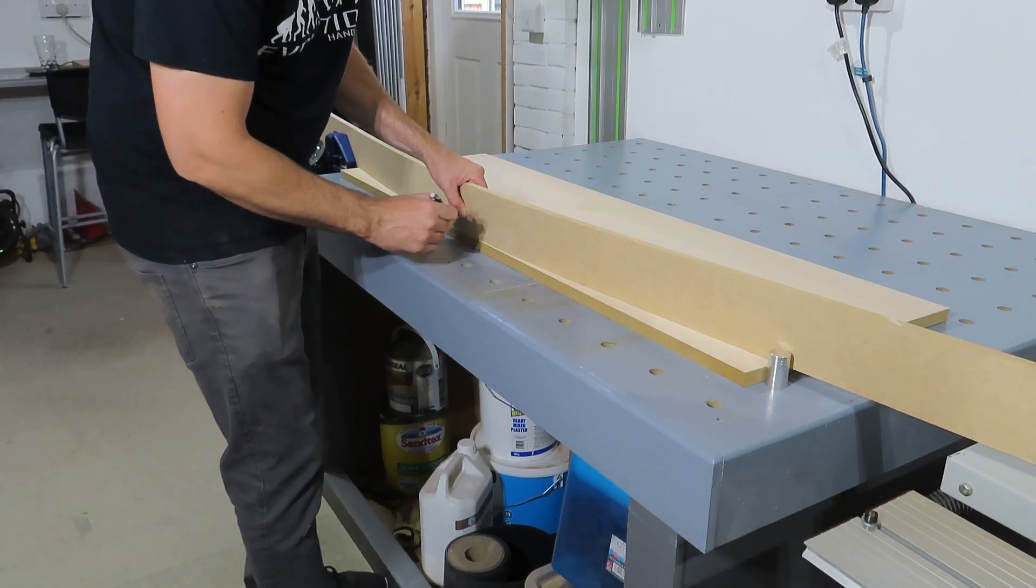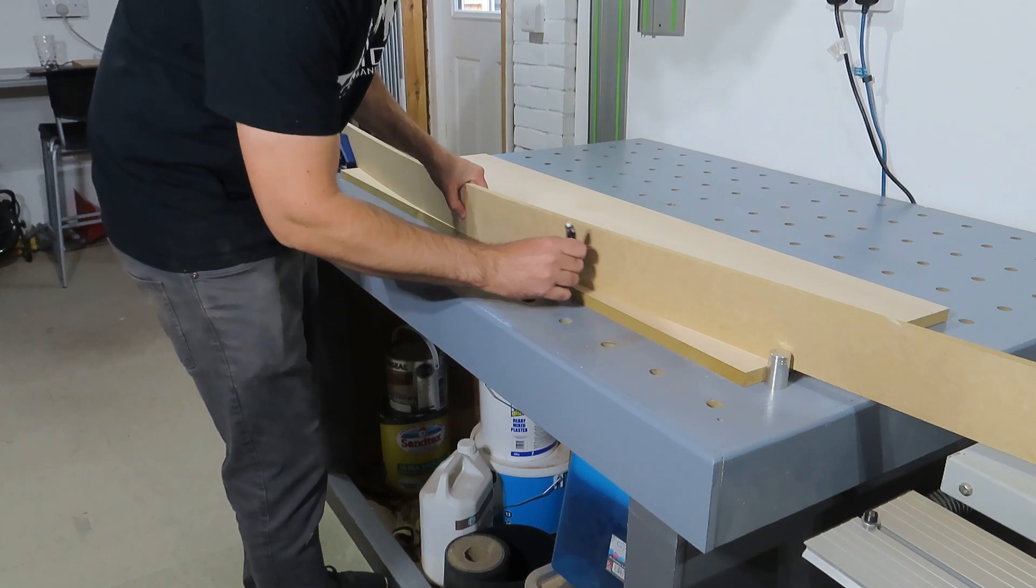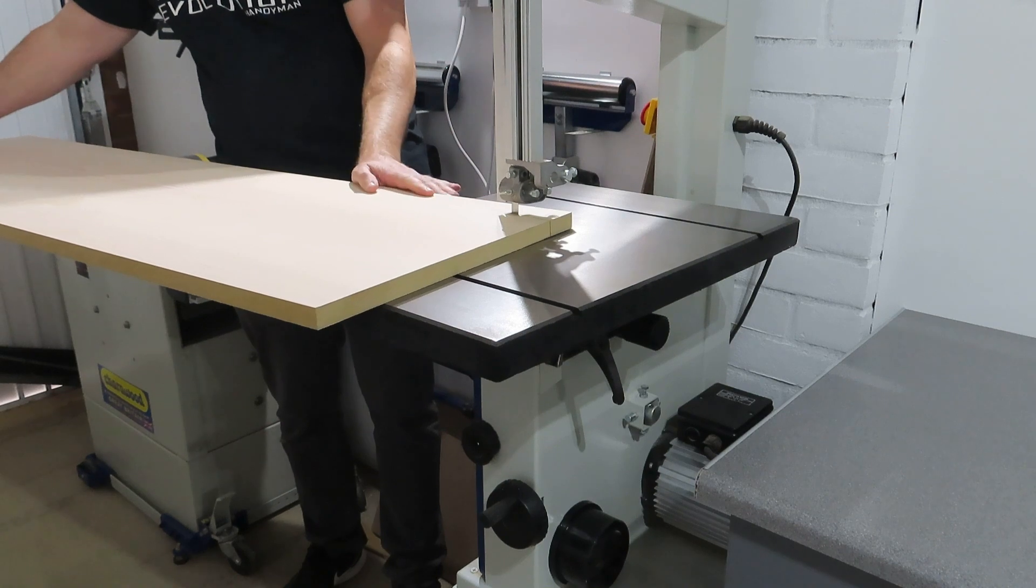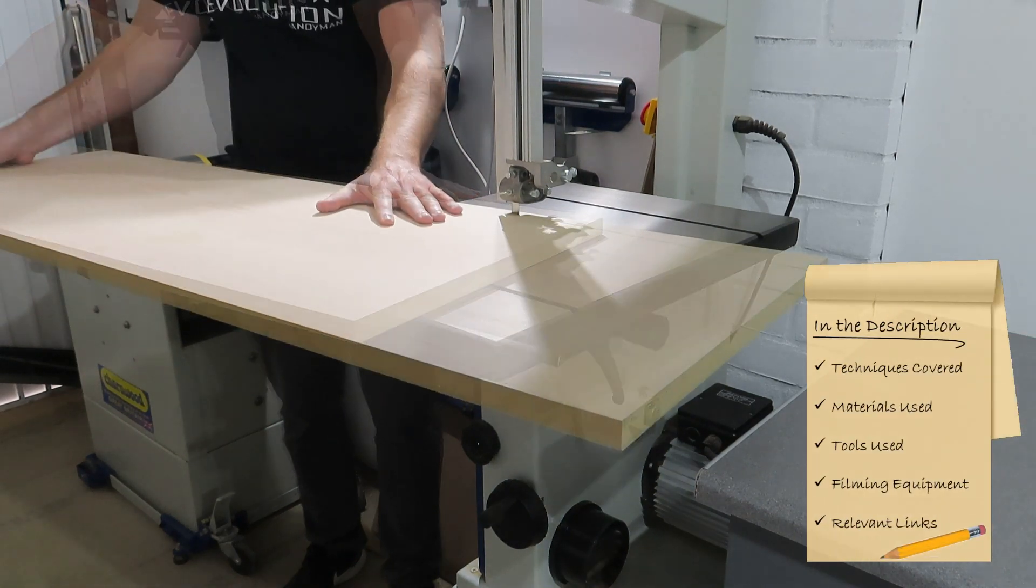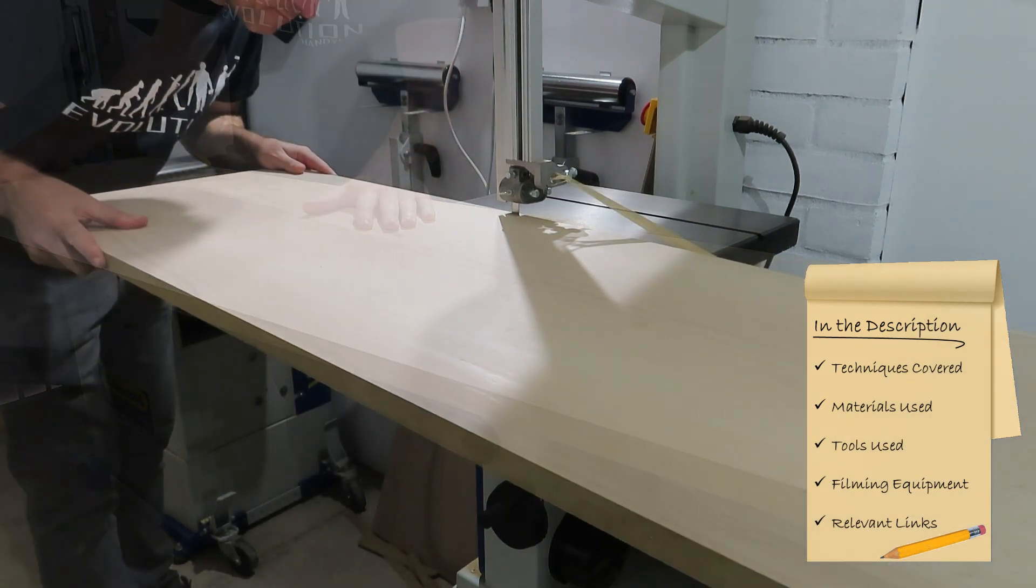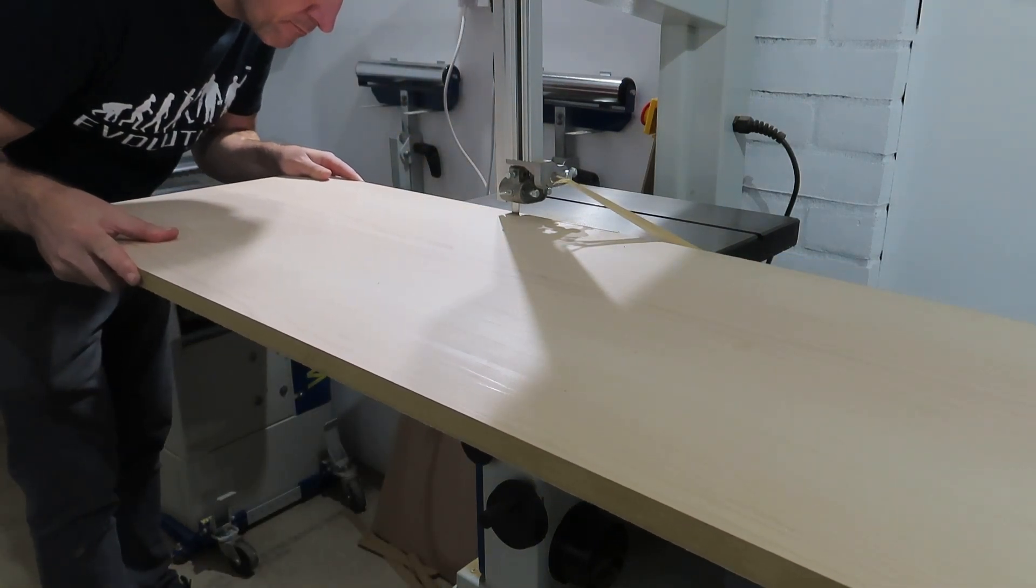You could make this with pocket holes, dowels, dominoes, or even just screw it together and plug the holes. For my desk, I've used this maple veneered MDF purely because I had a lot lying around and I didn't want to buy in any sheet material for this project.